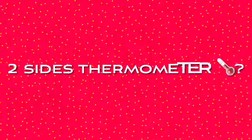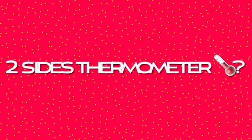And if the liquid is going down, it means it's getting cold. There are two sides to the thermometer — one side is used to measure the temperature in degrees Fahrenheit and the other side is used to measure it in degrees Celsius.